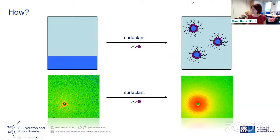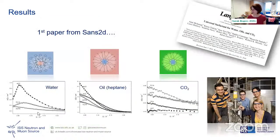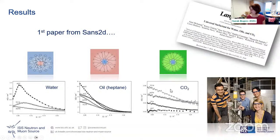On the raw detector images you get basically nothing before adding surfactant, then clear scattering around the beam stop afterwards. The first paper from SANS2D was on a specially designed tri-chain surfactant with three tails, which not only worked in CO2 but also in water and in oil — a super-versatile surfactant that works under any of the conditions of interest.